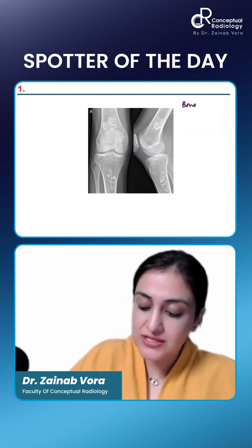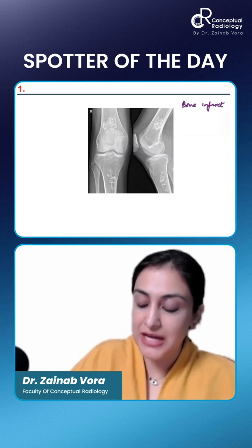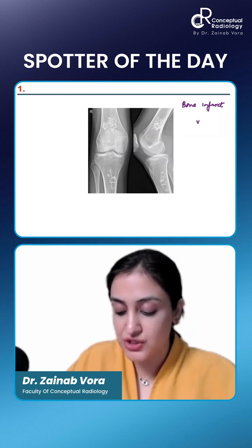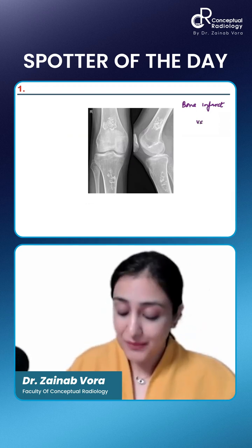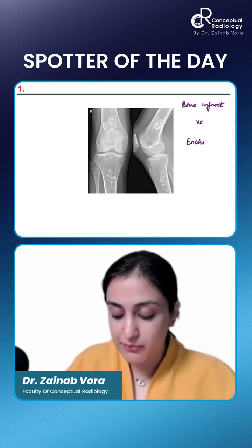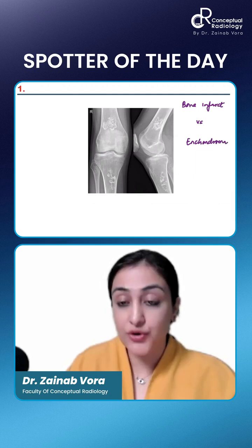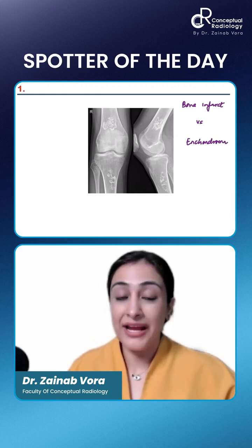What is the closest differential diagnosis of bone infarct that you will be asked to distinguish from? Enchondroma. So it's essentially bone infarct versus enchondroma.